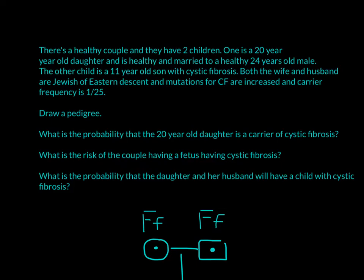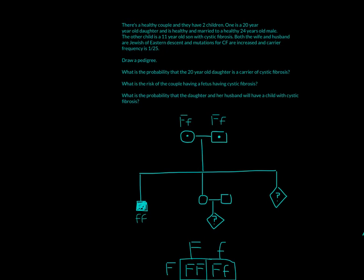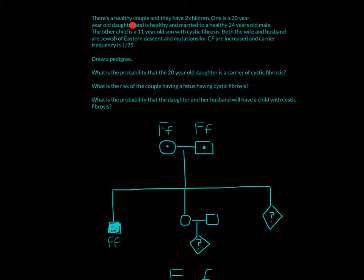First, draw a pedigree. We know that the couple are healthy, so they do not have cystic fibrosis, but they did have a child with cystic fibrosis. Since cystic fibrosis is autosomal recessive, both parents have to be carriers — that's why we have the dots in the middle. Circles represent girls, squares represent guys. The son with cystic fibrosis is colored in, showing his genotype is two recessive alleles. We don't know the genotype of the daughter or the offspring about to be born.